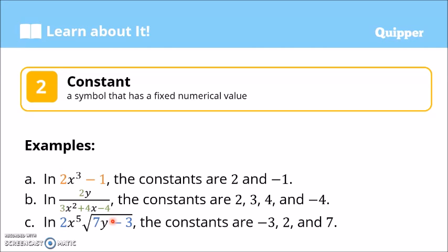What is a constant? A constant is a symbol that has a fixed numerical value — from the word 'constant,' meaning it does not change. For example, in 2x³ − 1, the constants are 2 and negative 1. Note that the 3 here is not a constant because it is an exponent — exponents are different from constants.